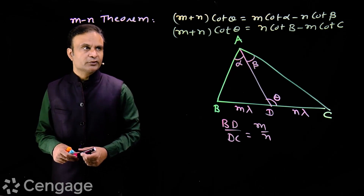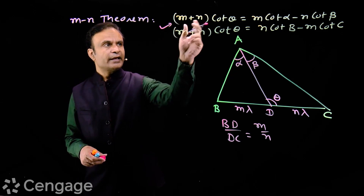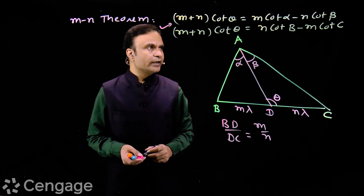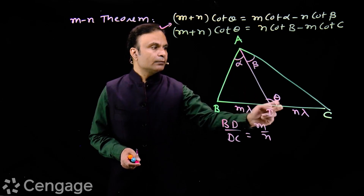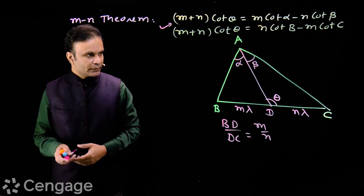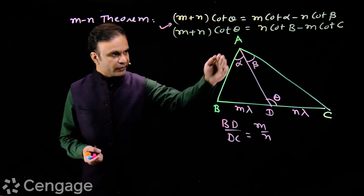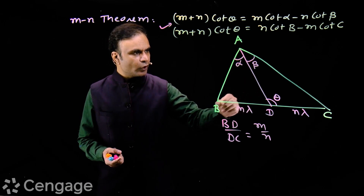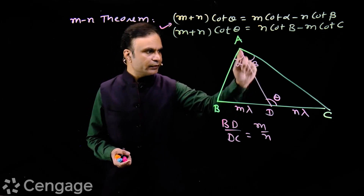There are two formulas for the MN theorem. The first formula is: (m + n) cot theta equals m cot alpha minus n cot beta. We note that side AD is common between triangles ABD and DAC, so we will be using the sine rule.